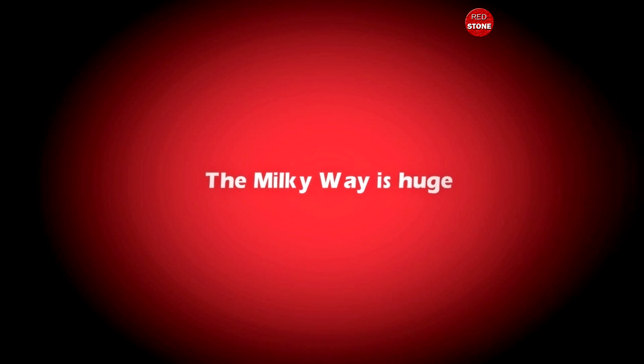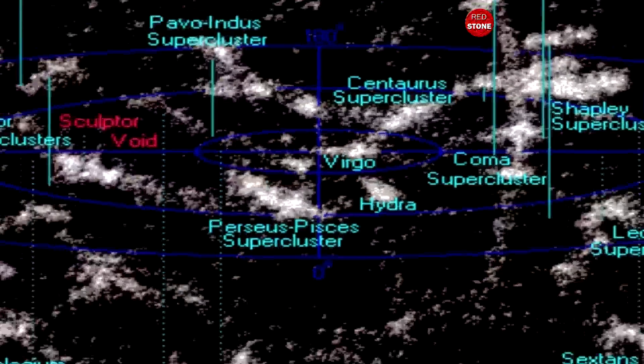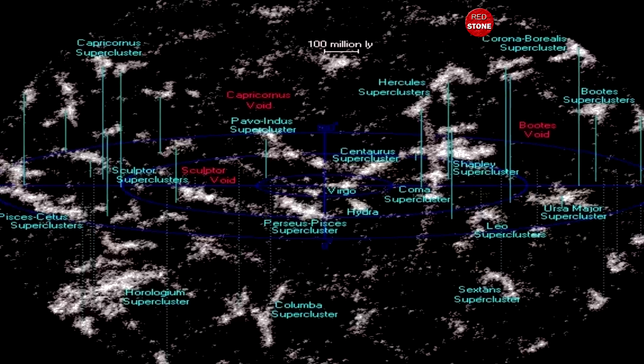2. The Milky Way is huge, but it's actually part of an even larger grouping of galaxies known as the Virgo supercluster.